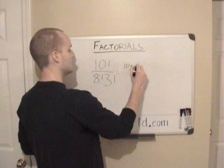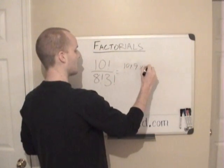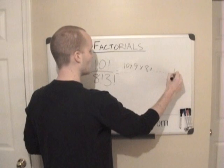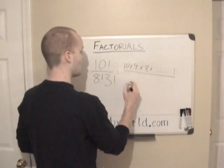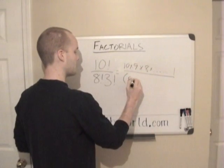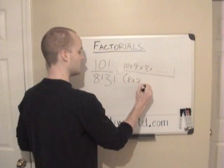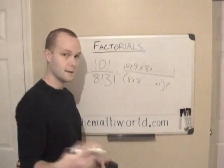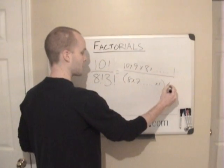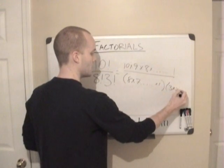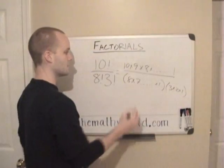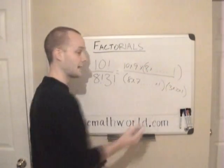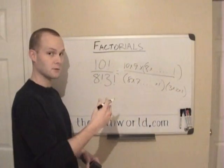So we have 10 times 9 times 8 times all the way down to 1. And then at the bottom we have 8 times 7 all the way down to 1. And that is multiplied by 3 times 2 times 1. So we already know what this is, but we can cancel out some here.